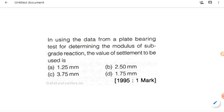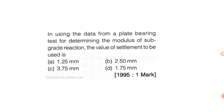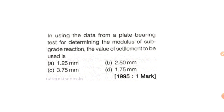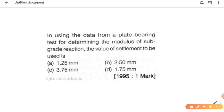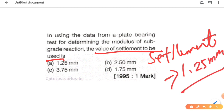Last question: in using data from a plate bearing test for determining the modulus of subgrade reaction, the value of settlement to be used — it is a constant. The settlement is equal to 1.25 mm. So answer A is our answer.